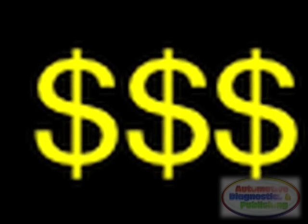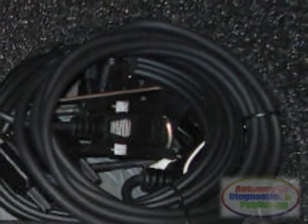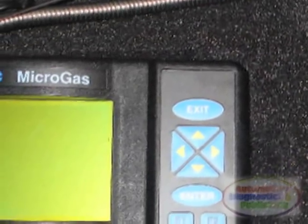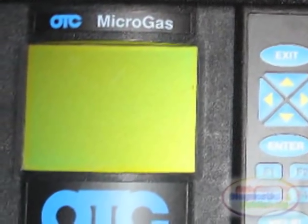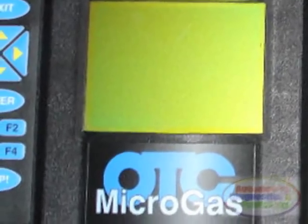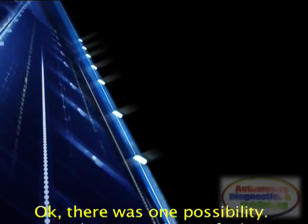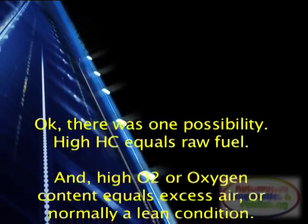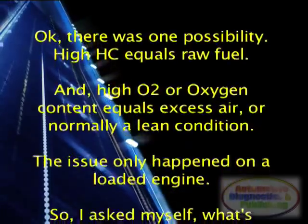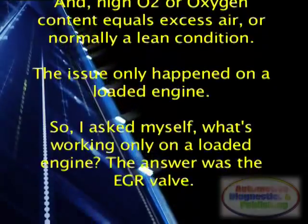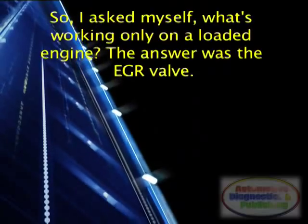But wait — what could it possibly be then? I decided to get tough with this Honda and opted for a 5-gas analyzer. The 5-gas was the authority on air-fuel issues. I connected the exhaust probe and proceeded to do an idle and high RPM unloaded test. The mixture was right on the money. Then, as I continued with the loaded part of the test, I immediately saw that the HC went through the roof, and I also saw that the O2 content went high. High HC equals raw fuel, and high O2 content equals excess air — normally a lean condition. The issue only happened on a loaded engine, so I asked myself: what's working only on a loaded engine?